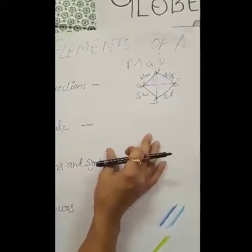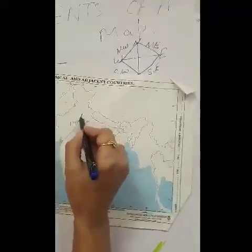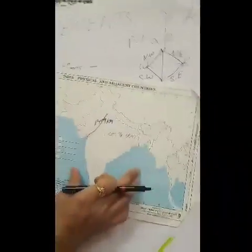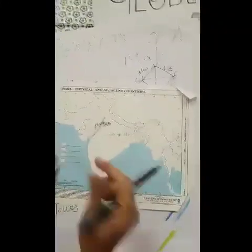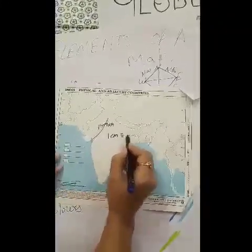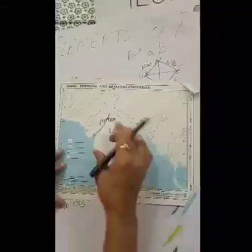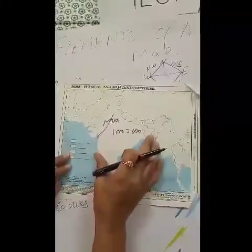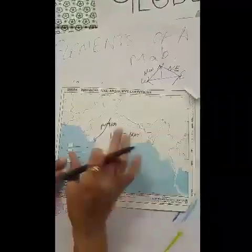For example, the distance between Mumbai and Delhi is 1409 km. We cannot show this large distance as-is on a small map. So we use a smaller unit — for example, 1 cm is equal to 1 km. All maps are drawn with the help of scale; without scale, we cannot draw any map.